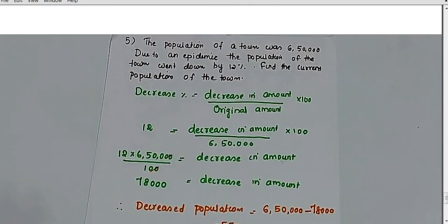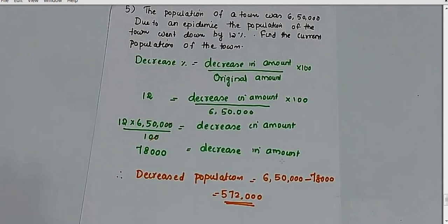This is our last question: The population of a town is 6,50,000. Due to a pandemic — meaning a disease like corona — the population of the town went down by 12%. Find the current population of the town. So we use the decrease percentage formula: decrease in amount upon original amount, multiplied by 100. Decrease percentage is 12%, original amount is 6,50,000.